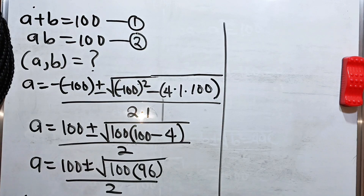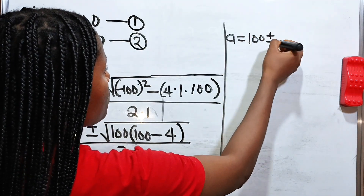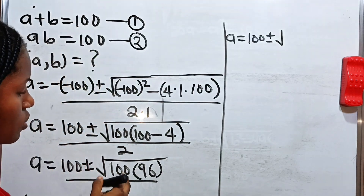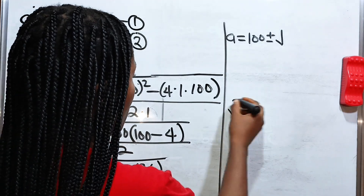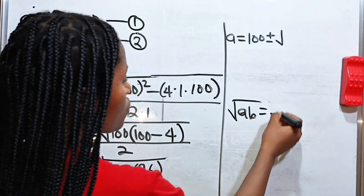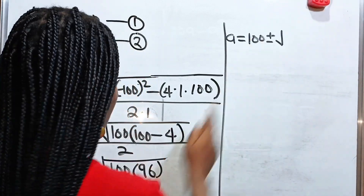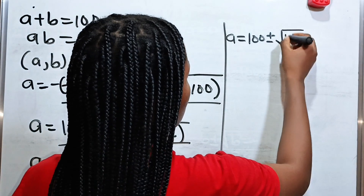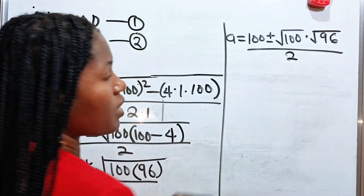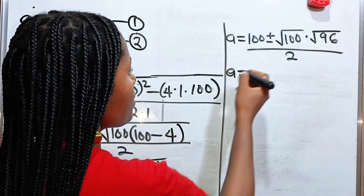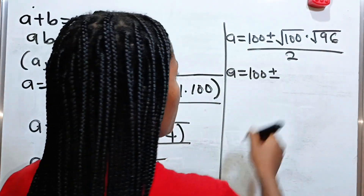From what we have here, we have that A is equal to 100 plus or minus — now this can be written as square root of 100 multiplied by square root of 96 — because square root of AB is equal to square root of A multiplied by square root of B. So you can now write this as square root of 100 multiplied by square root of 96, everything divided by 2. A is equal to 100 plus or minus, and square root of 100 is 10.